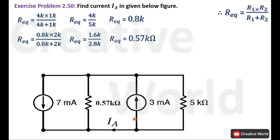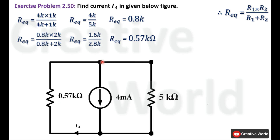Now we have only two parallel connected resistances. We will find the combined current of the two current sources so we can apply current divider rule. Observing the node: 7mA is leaving and 3mA is entering. The resultant current is 4mA leaving the node, calculated by subtracting the entering current from the leaving current. The circuit is modified accordingly with this 4mA source, and we are now ready to apply the current divider rule.